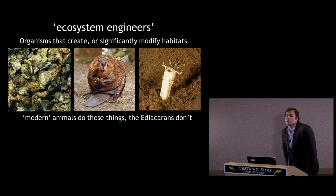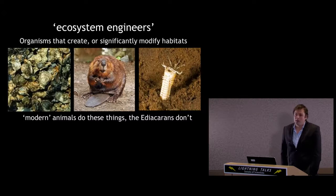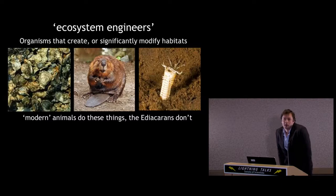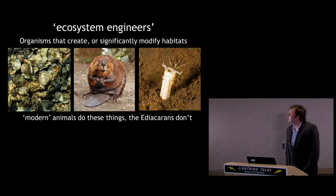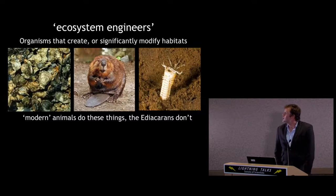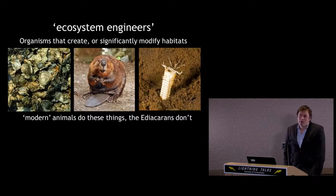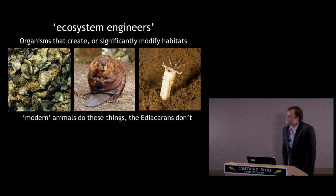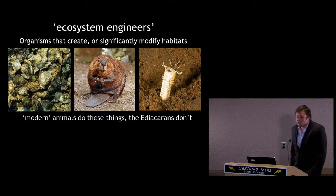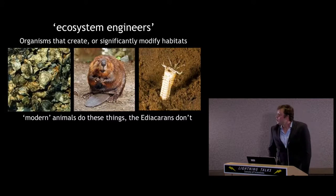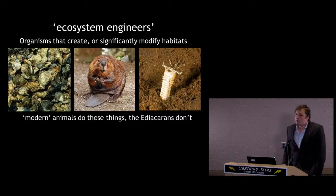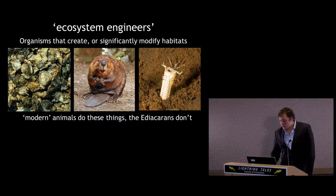On the far left, these are oysters. Just like sea anemones, oysters are filter feeders and they clean and scrub the water column. Beavers obviously create vast new habitats and redirect streams and rivers. On the far right, this is a polychaete worm — quite apart from being a voracious predator, polychaetes burrow and so they mix and churn the sediment. What's important to realise is that modern Cambrian-type animals do all these things. The Ediacaran biota, by and large, don't.